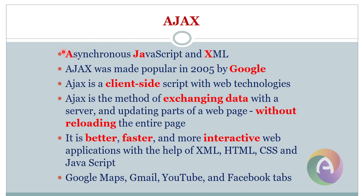Ajax means Asynchronous JavaScript and XML. Continuous data and asynchronous. JavaScript and XML — this is an extensible markup language. This is a script language. This is a continuous flow. This is Java Ajax.